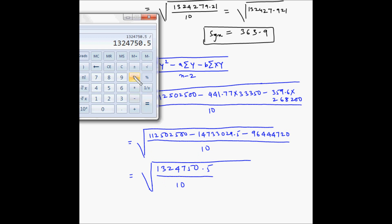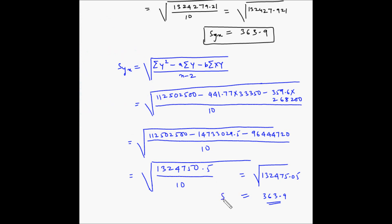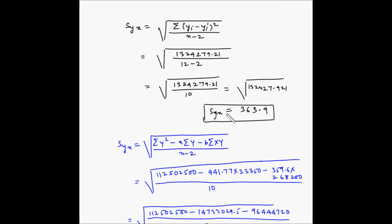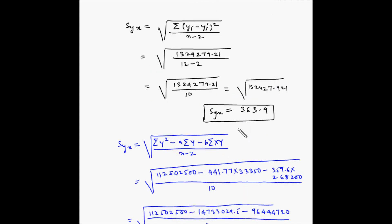Plugging into the second formula: S_yx equals the square root of (112,502,500 minus 441.77 times 33,350 minus 359.6 times 268,200) divided by 10. This simplifies to the square root of 132,475.05, which equals 363.9 — the same value found using the first formula. So this second formula is much easier to calculate and gives the same answer. You can use either formula depending on your convenience.